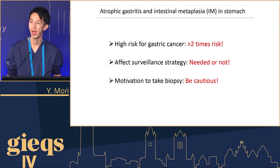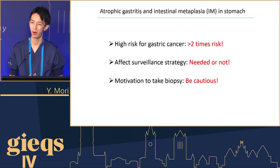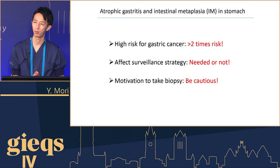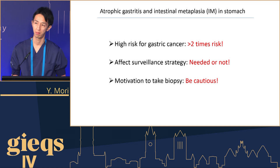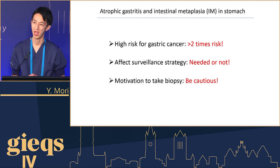So this is my COI, and today there are three key points. Number one is that IM, or atrophic gastritis, is the high-risk condition for gastric cancer — maybe two times more high risk.